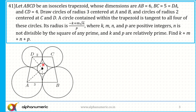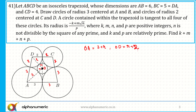Since all circles are tangent to each other, the radius of each outer circle at A and D is 3, and at B and C is 2. The center of the inner circle is O with radius R. So OA equals 3 plus R, and OD equals R plus 2.